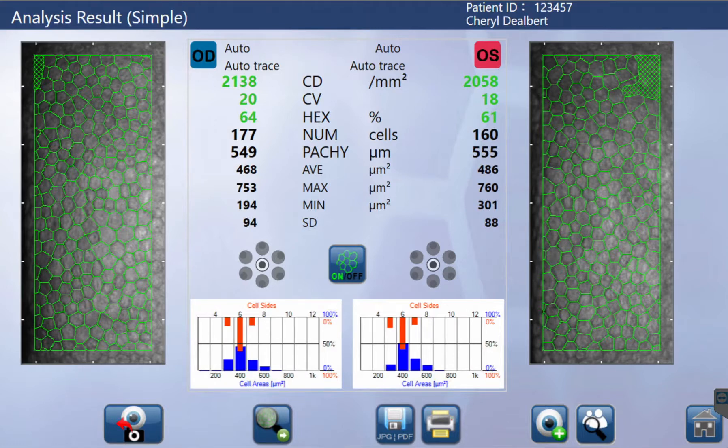The report provides clinicians all of the necessary parameters to assess the health of the corneal endothelium, including cornea thickness, cell size and shape, as well as the location of where the image was taken.